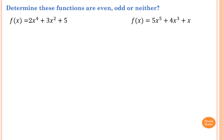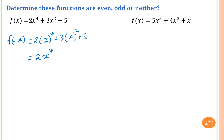Please stop the video and try this one yourself. Part i: we find f(-x) first. f(-x) equals 2 times negative x to the power 4, plus 3 times negative x squared, plus 5. Negative x to the power 4 is x to the power 4, and negative x squared is x squared. So this is exactly the same as f(x), therefore f(x) is even.